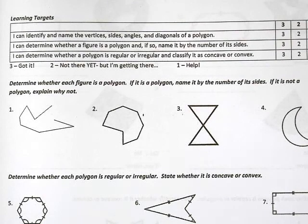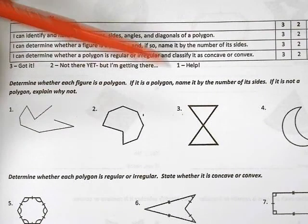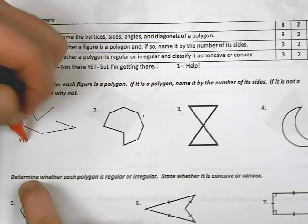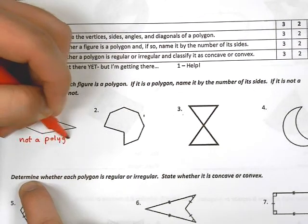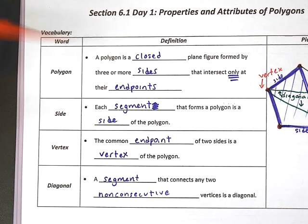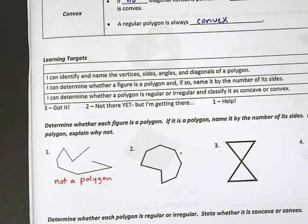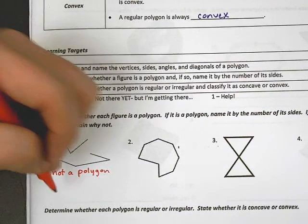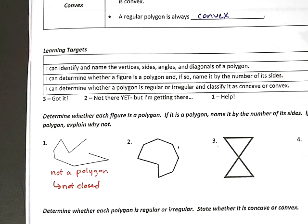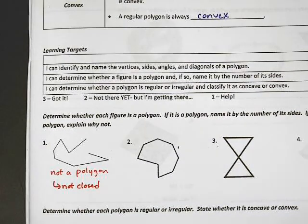We want to determine whether each figure is a polygon. If it is, name it by the number of sides. If it's not, explain why. Number one — hopefully you agree with me — this is not a polygon. We can go back to our definition: a polygon has to be a closed plane figure. Is this a closed plane figure? No. Not closed. That's my explanation — because it's not closed, I know it's not a polygon.